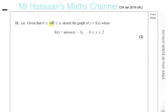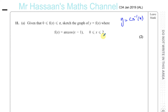Part A says, given that the function f of x is between 0 and pi, sketch the graph of y equals f of x, where f of x equals arc cosine of x minus 1. Now arc cosine is basically the inverse of cosine x — sometimes it's written as cosine to the minus one.